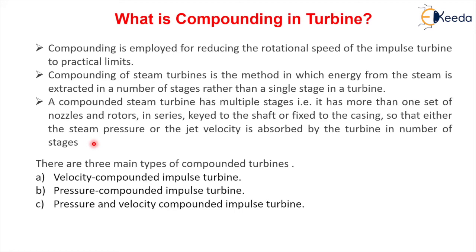Based on the absorption of kinetic energy or pressure energy, there are three types of compounding: first, velocity compounded impulse turbine — where velocity is absorbed in a number of stages; second, pressure compounded impulse turbine — where pressure is absorbed in a number of stages; and third, pressure and velocity compounded impulse turbine — where both pressure and velocity are absorbed in a number of stages.